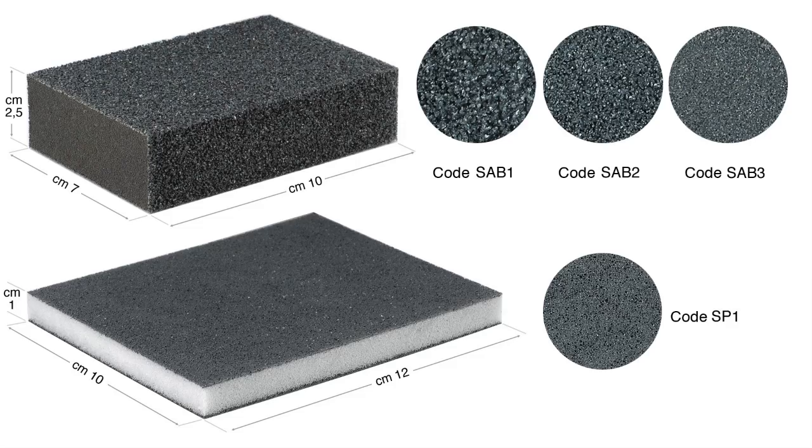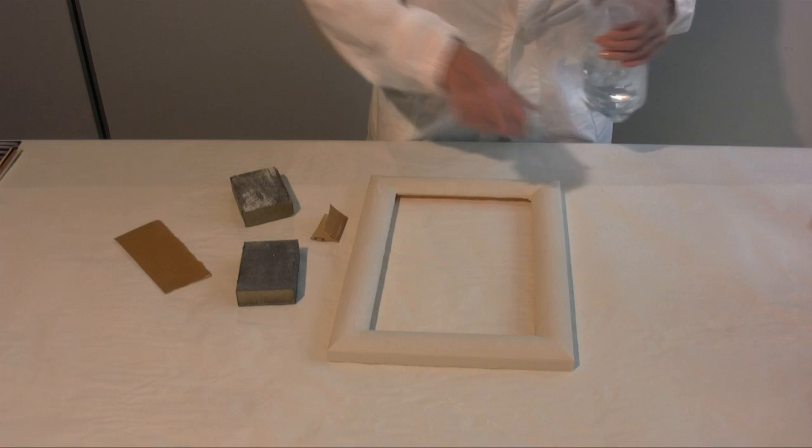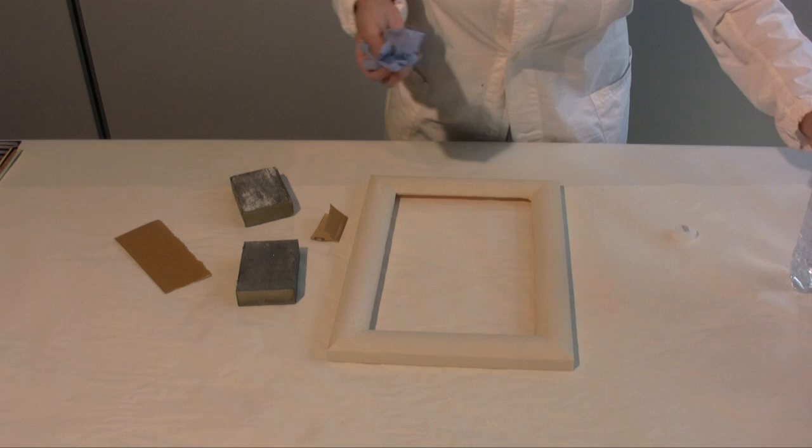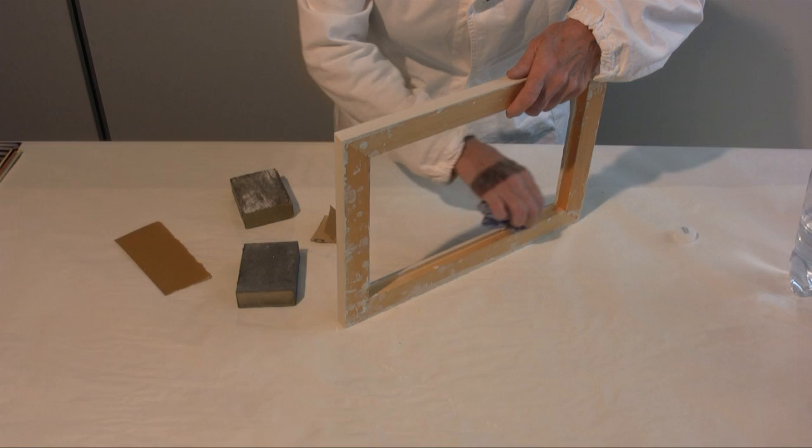Also a damp rag is more than suitable for sanding. The rag has to be frequently soaked in water as the plaster tends to dry it quickly. You have to pay attention to not wet the plaster too much otherwise the small decoration details will flatten.